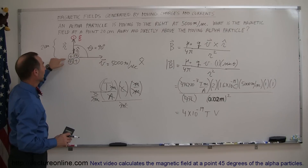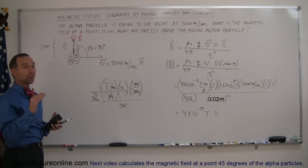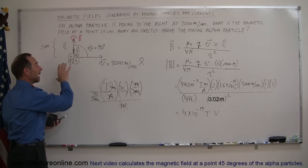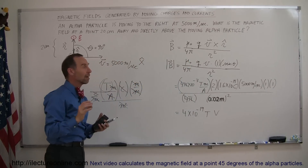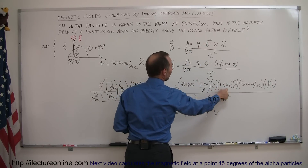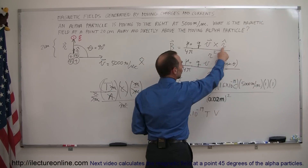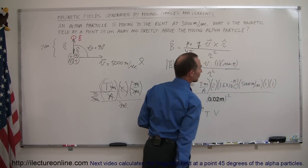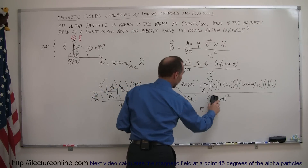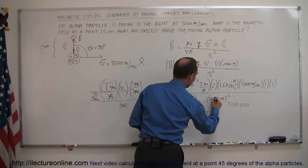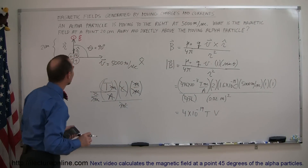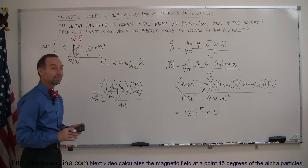To recap: the alpha particle has two positive charges moving to the right. Use the right-hand rule — thumb in direction of motion, fingers curl in the direction of B — giving a field coming out of the board above the particle. For magnitude, use B = (μ₀ / 4π) × q × v × sin(θ) / r², with θ = 90°, charge = 2 proton charges, and distance = 0.02 m (not 2 cm), giving 4 × 10⁻¹⁹ T.